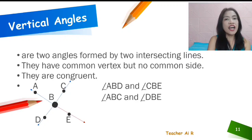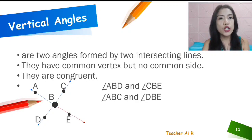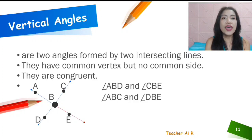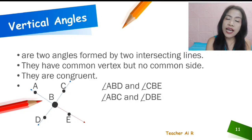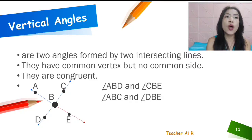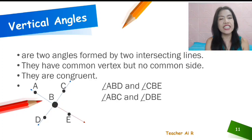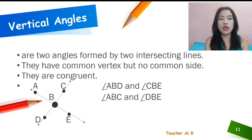When we say vertical angles, they are two angles formed by two intersecting lines and they have a common vertex but no common side. So, adjacent angles have a common side, while vertical angles do not have a common side. But they are congruent.